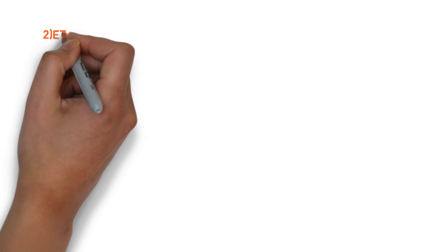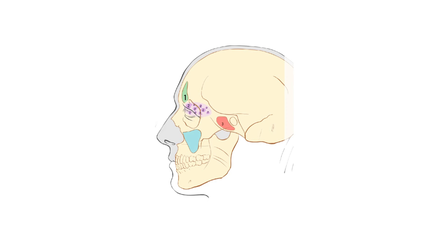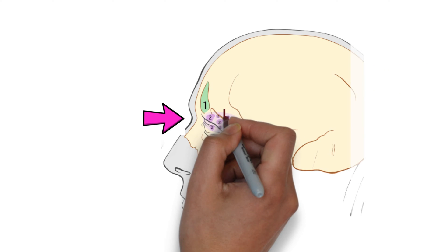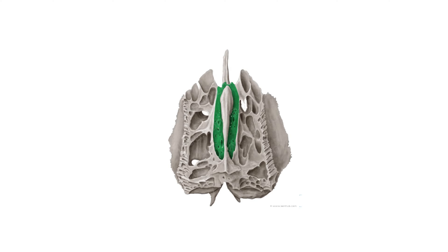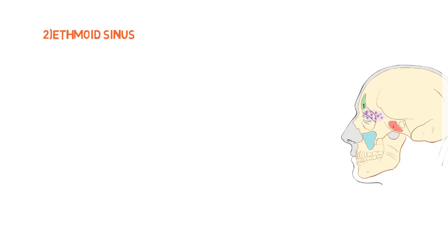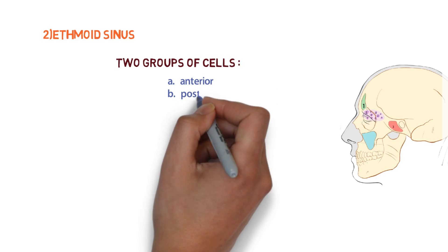The second is the ethmoid sinus, which is divided into two groups: the anterior ethmoid sinus and the posterior ethmoid sinus. Looking at the human skull, if we remove the nasal spine of the frontal bone and zoom into that area, we have the ethmoid bone. The ethmoid sinuses are thin-walled air cavities in the lateral masses of the ethmoid bone, divided into an anterior group and a posterior ethmoid group.